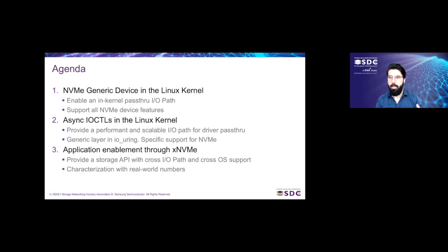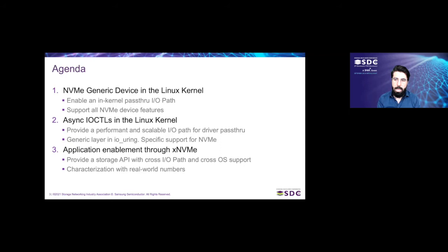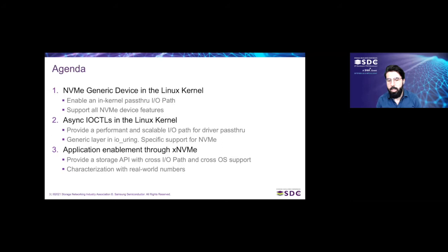We are dividing the presentation into three main parts. First, I'm going to talk about the work we're doing in NVMe to enable this in-kernel pass-through IO path — what is the motivation, what we want to cover, and how it relates to the other IO paths already available in Linux. Then Kanchan will talk about asynchronous IOCTLs, which is necessary for the NVMe in-kernel pass-through to perform at scale. Finally, Simon will wrap everything up, talk about how you use this path, and cover the work in XNVMe to provide a common storage API, including a demo and performance numbers on real-world applications.